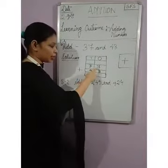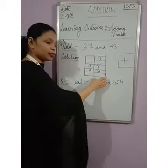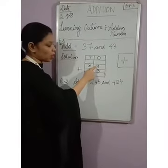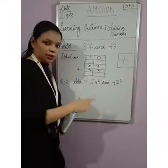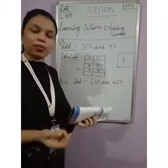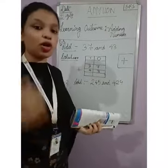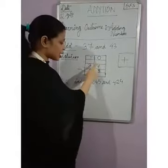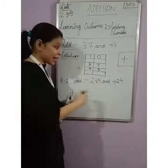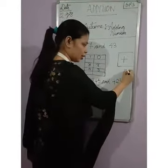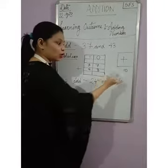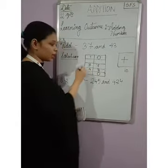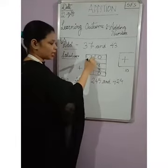We always start from the 1s column in addition. So here we have 7 and 3. You can add using your fingers or mental addition. 7 plus 3 gives us 10. So 0 comes in the 1s column and 1 is carried over to the 10s column.